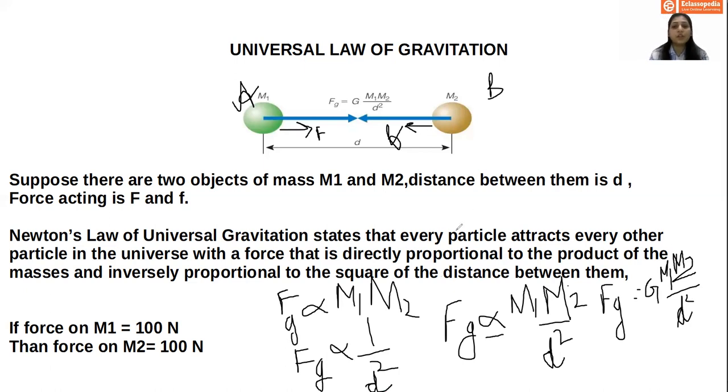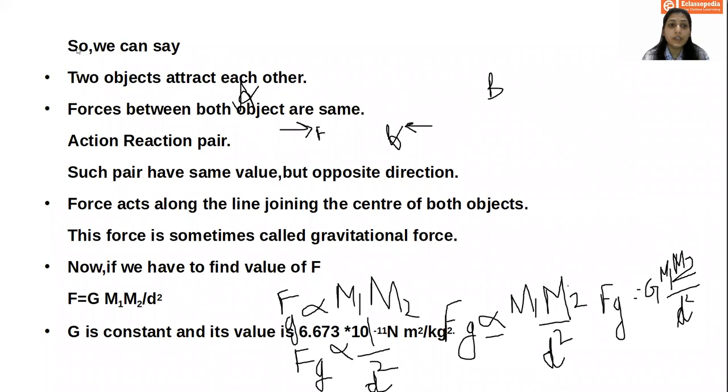So we check out again Newton's law of universal gravitation states that every particle attracts every other particle in universe with a force that is directly proportional to product of masses and inversely proportional to the square of distance between them. Suppose, now if the force on M1 is 100 Newton, then the force on M2 will be 100 Newton again.